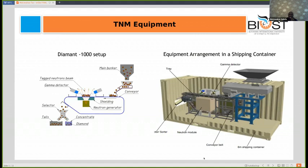The TNM equipment arrangement: the schematic diagram shows a conveyor belt that transports the trays to the inspection zone where they are irradiated with fast neutrons. The gamma emitted from the kimberlite is detected by gamma detectors. The trays are then separated by a selector, which separates the diamond-bearing kimberlite from the barren ore.